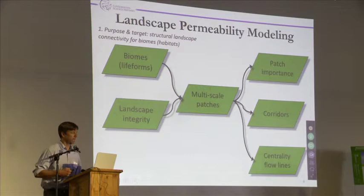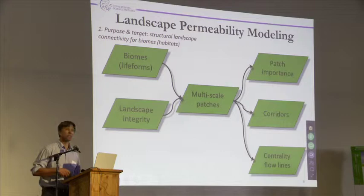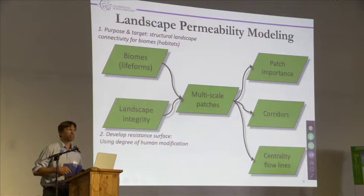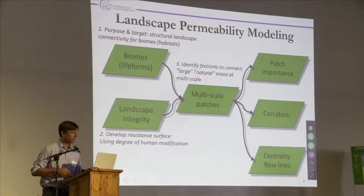In any modeling process — this echoes a little of what Tabitha said — purpose and target: you really need to be clear about what you're trying to connect, what is the species or the process. This is very much a structural landscape connectivity approach, maybe veering a little into the functional side because we're trying to look at biomes or habitats in general. We're using a resistance surface — the degree of human modification — so higher human modification means more resistance. The inference is that this generally applies to animal species and processes that are sensitive to humans.